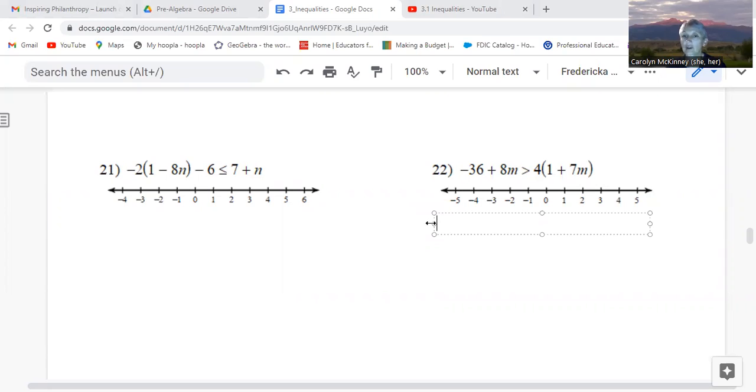So look at both sides. On the left side, there's nothing I can simplify, right? There's nothing that can be combined. There's no parentheses. But on the right side, I do have parentheses. So I can distribute 4 times 1 is 4, and then 4 times 7m is plus 28m. Now I need to get those variables on the same side.